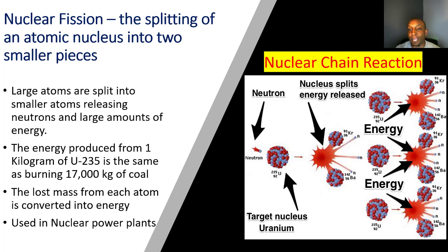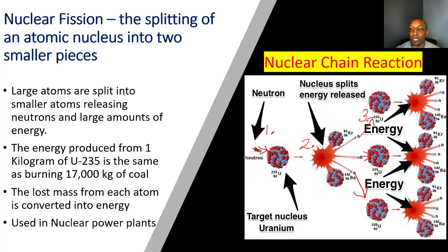Looking over here to the right we have a nuclear chain reaction diagram. The first thing that happens is a neutron is fired into the nucleus of uranium-235. The uranium-235 is then split into smaller elements — we have krypton and barium — and once they split they release neutrons and a lot of energy. Those three neutrons each hit another uranium-235 atom, causing them to split and release large amounts of energy as well.